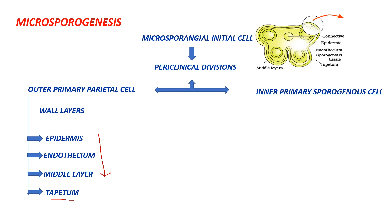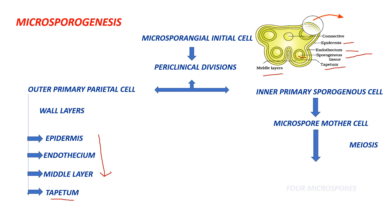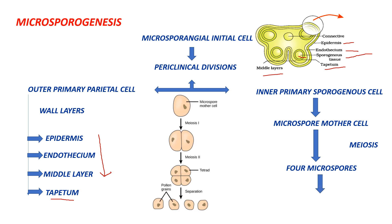The cells of the tapetum are multinucleated and have dense cytoplasm. Inside the tapetum is the sporogenous tissue, which gives rise to pollen grains. The sporogenous cell undergoes several divisions to form the microspore mother cell, which then undergoes meiosis I and meiosis II to give rise to four microspores. These four microspores are haploid in nature and are the pollen grains in the single cell stage.